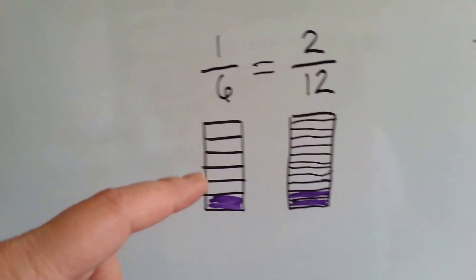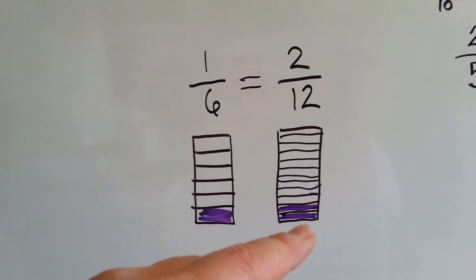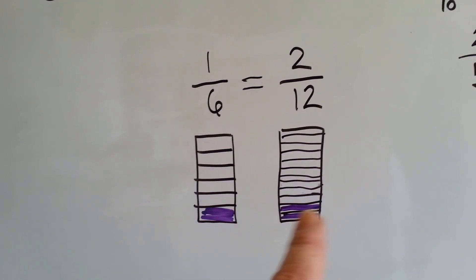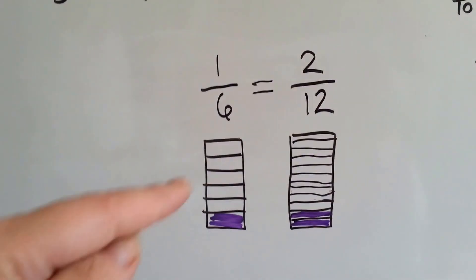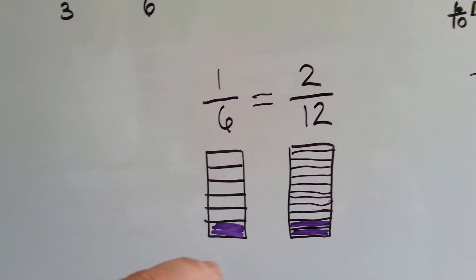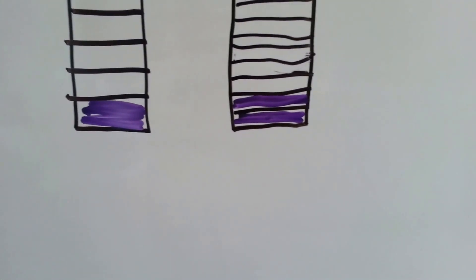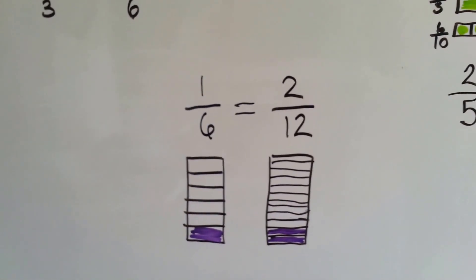Look at this one. This one's broken into six pieces. This one's broken into twelve pieces. One of the six is colored in, and two of the twelves are colored in. But it's the same amount. All you have to do is put another line in the sixths, and it would become twelfths. Or, take one of the lines away, and that would become a six. So one sixth is equal to two twelfths.